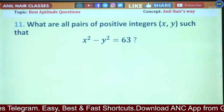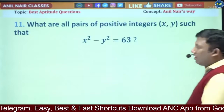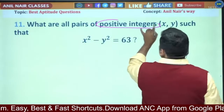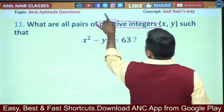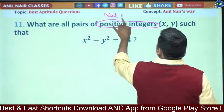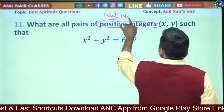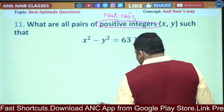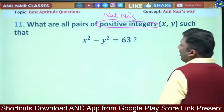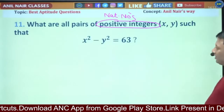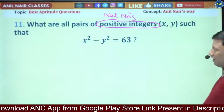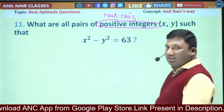Question 11. What are all the pairs of positive integers — also called natural numbers — such that x squared minus y squared equals 63?